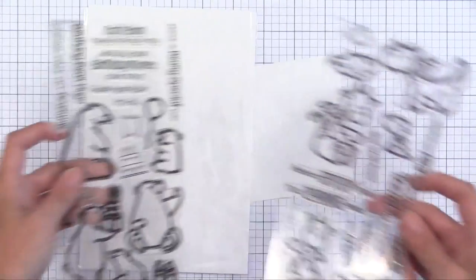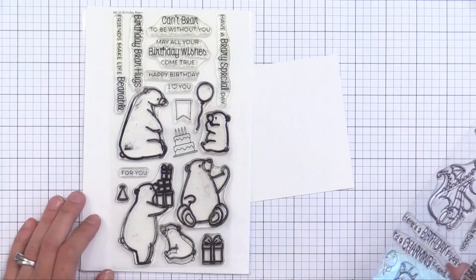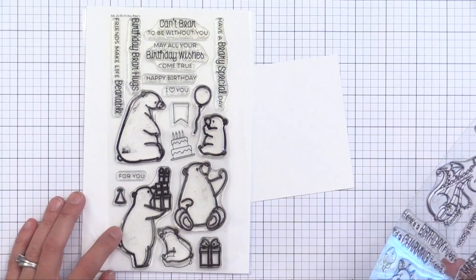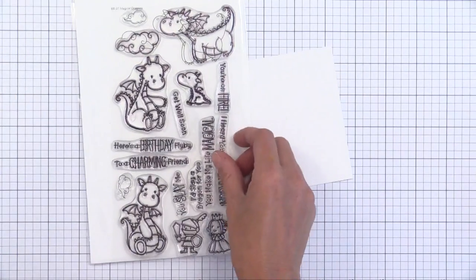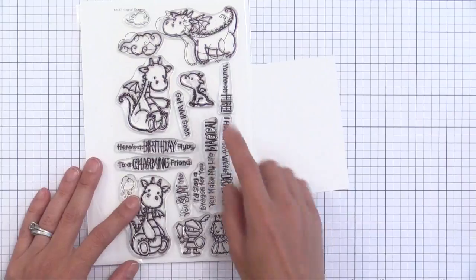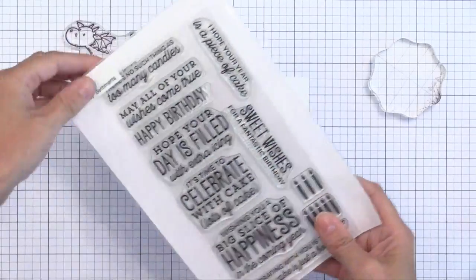I'm using a new dragon stamp set from My Favorite Things. It's absolutely adorable. And I'm also using the cake from this older My Favorite Things stamp set. I'm going to put those images together. Now this dragon, I thought it would be cute to make it look like he's blowing out the candles instead of blowing fire.